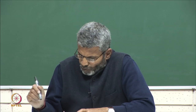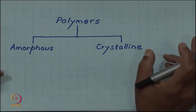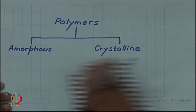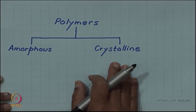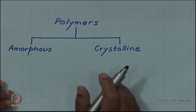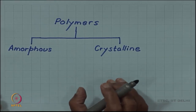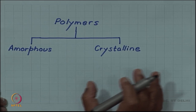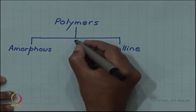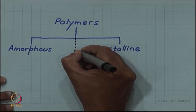Polymers can be either amorphous or crystalline. In fact, a given polymer is never fully amorphous or fully crystalline. A given sample of polymer may have regions of amorphous phase and regions of crystalline phase. Such a state is called semi-crystalline.